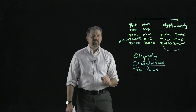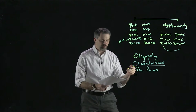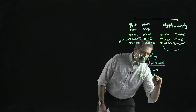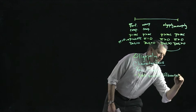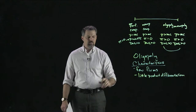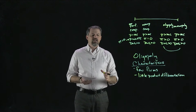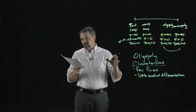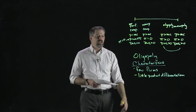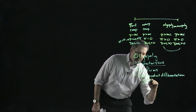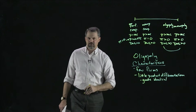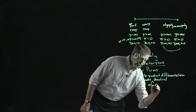The second characteristic is little product differentiation. We're going to think about firms selling almost identical products. We can have an oligopoly where firms sell identical products or one where they sell differentiated products, and each type behaves a little differently. For what we're doing, let's assume the goods are almost identical.